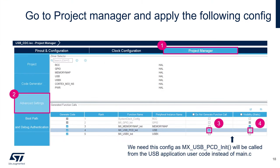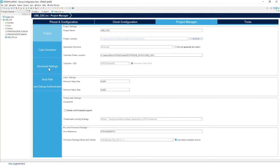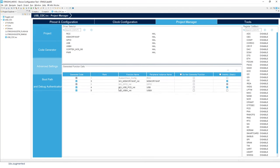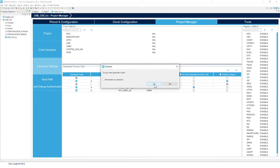One last configuration is needed. Go to the Project Manager and click on Advanced Settings. We're going to click to not generate the function call for MX_USB_PCD_Init, and also remove its visibility. We do this because MX_USB_PCD_Init will be called from the USB application user code instead of main.c. Save the project to generate the code and click Yes.